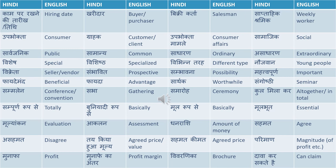The first word is seminar — sanghoshti. And the second one is conference or convention — jis ko hum bolenge sammelan. Seminar and convention kind of sound similar but there is a small minor difference: seminar is sanghoshti, and convention or conference is sammelan. Sabha means gathering. Samaroh means ceremony — it can also be called a function. Kul milakar means altogether or in total.